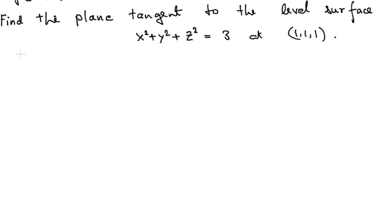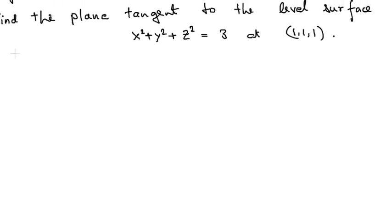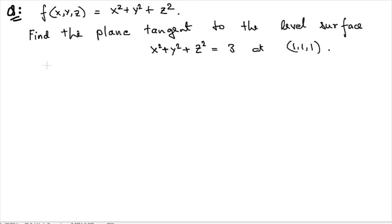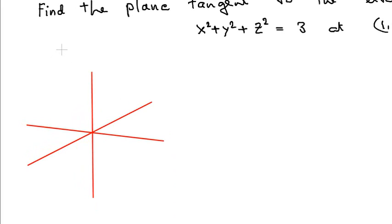Let's see an example. Suppose f(x,y,z) = x² + y² + z². Our job is to find the plane tangent to the level surface x² + y² + z² = 3 at the point (1,1,1). We easily recognize that this represents a sphere with radius √3.